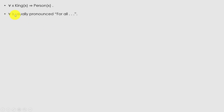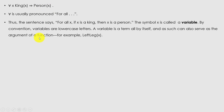The rule 'all kings are persons' is written in first-order logic as: ∀x King(x) ⇒ Person(x). The symbol ∀ is pronounced 'for all.' So for all x, if x is a king then x is a person. The symbol x is called a variable; by convention variables are lowercase letters. A variable is a term by itself and can serve as the argument of a function — for example, LeftLeg(x). A term with no variables is called a ground term.